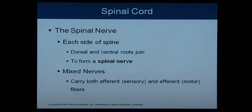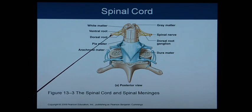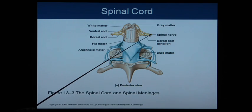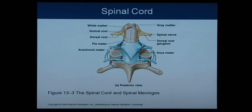On each side of the spine, the dorsal and ventral roots join together to form a spinal nerve. The nerves are mixed — they carry both afferent, meaning accessing or coming in sensory information into the central nervous system, and efferent, meaning going out or exiting, motor fibers. So the ventral and dorsal roots join together to form the spinal nerves, which contain mixed neurons: afferent sensory and efferent motor combined.